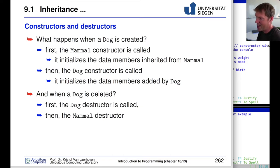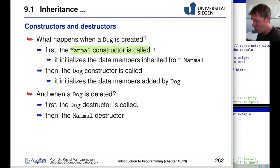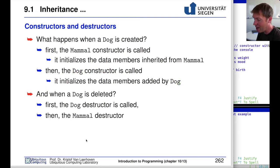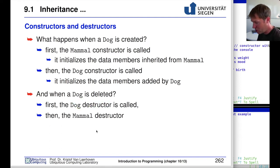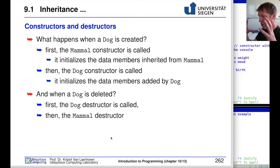Now let's address what happens with constructors and destructors — this can be a little tricky. When a dog is created, the mammal constructor is called first, initializing the inherited data members age and weight. Only after that is the dog constructor called to initialize the data members added by dog. When a dog is deleted — for instance when a function returns — the dog destructor is called first, and then the mammal destructor. It's like peeling an onion: creating goes from inside to outside, and deleting goes from outside to inside.